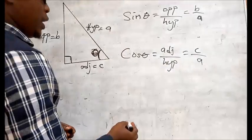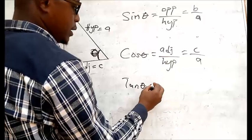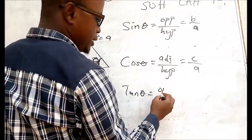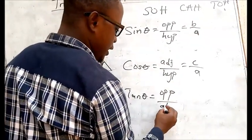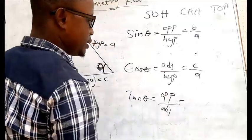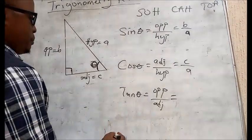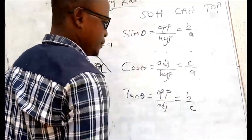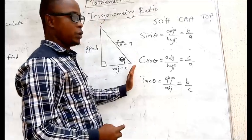Then the last one, which is your TOA, gives us tan theta equals to O over A — the O there is the opposite, all over the adjacent. So representing them by your alphabet, it will be B over C. So these are the parts of trigonometry we are going to treat.